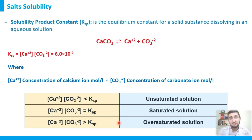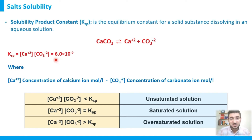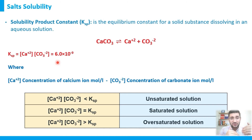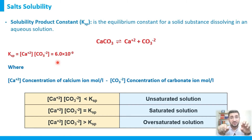Precipitates will form at the bottom of the beaker or water solution. The same principle applies to sodium chloride or any other salt: obtain the Ksp from a handbook, multiply the molar concentration of the cation by that of the anion, and compare the result to the Ksp. If higher, we have an oversaturated solution; if lower, we are in an undersaturated solution.